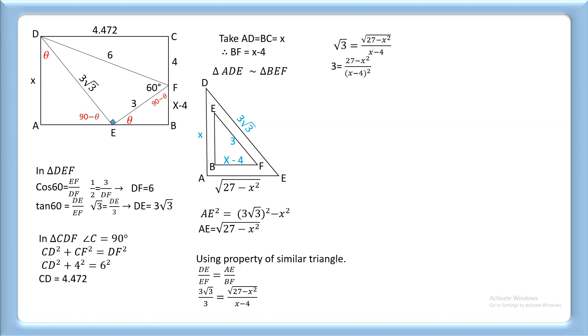Taking the square of both sides: 3(x - 4)² = 27 - x². After simplifying, we get 4x² - 24x + 21 = 0.